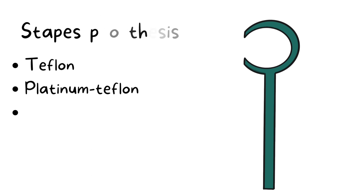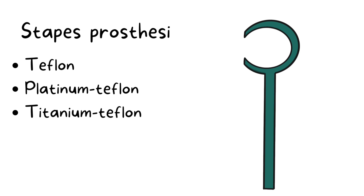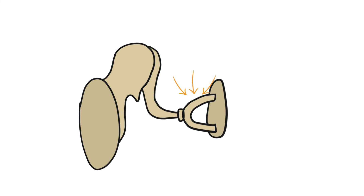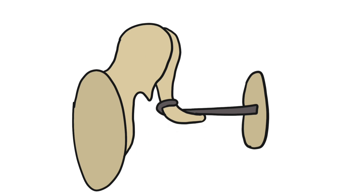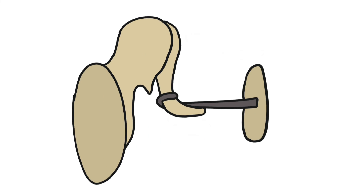The prosthesis used is usually a Teflon prosthesis, which is a polymer material, or a combination of platinum and Teflon, or a titanium and Teflon combination. The fixed and sclerotic stapes is removed and replaced with the prosthesis between the incus and the oval window.